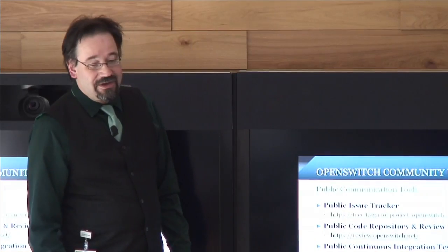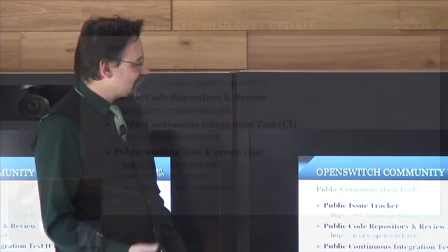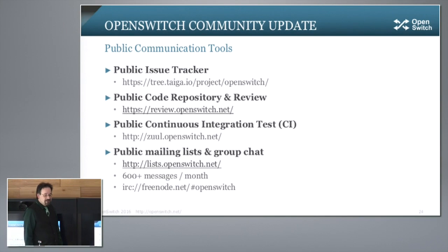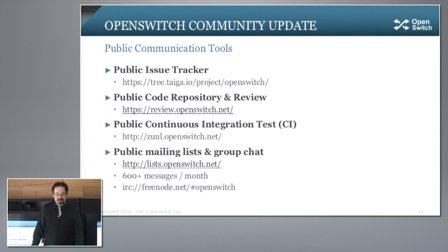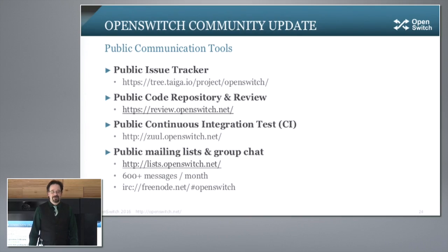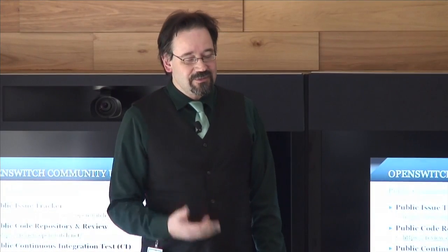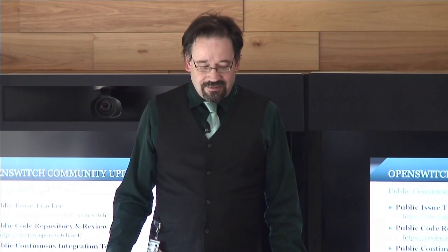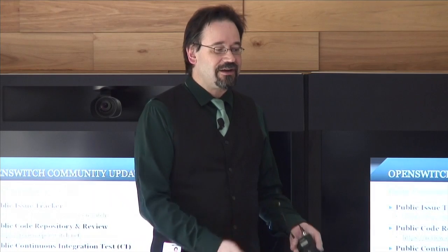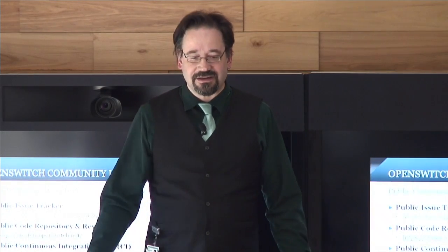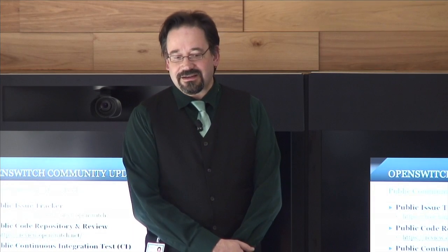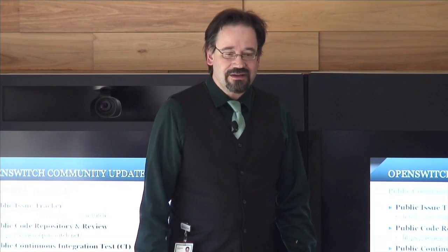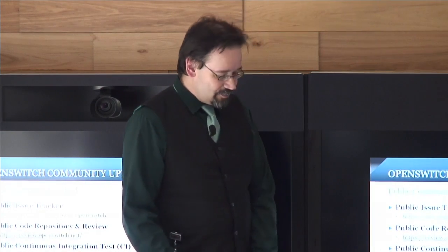We've been doing all the open source things already: the issue tracker is public, Git repositories are public, public continuous integration testing, public mailing lists, and public group chat. Our roadmap right now is kind of a meta roadmap — putting together the structure for a community to come together and talk about what they need next. If someone needs a new protocol or an old protocol, the correct solution is to show up, talk in the community, talk to Mikel who's the architect of all of this, and then design, implement, and merge in the protocols that you need using all of the standard open source tools.